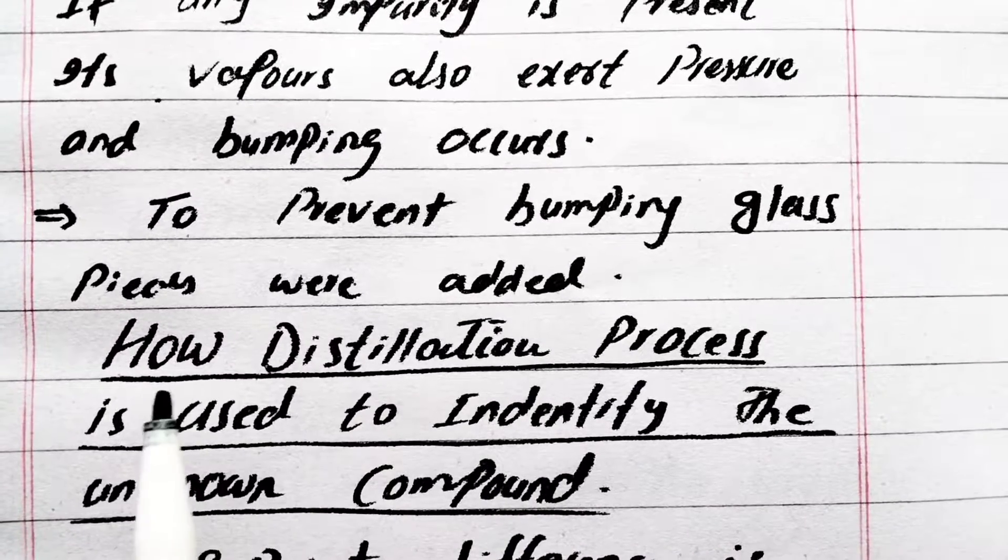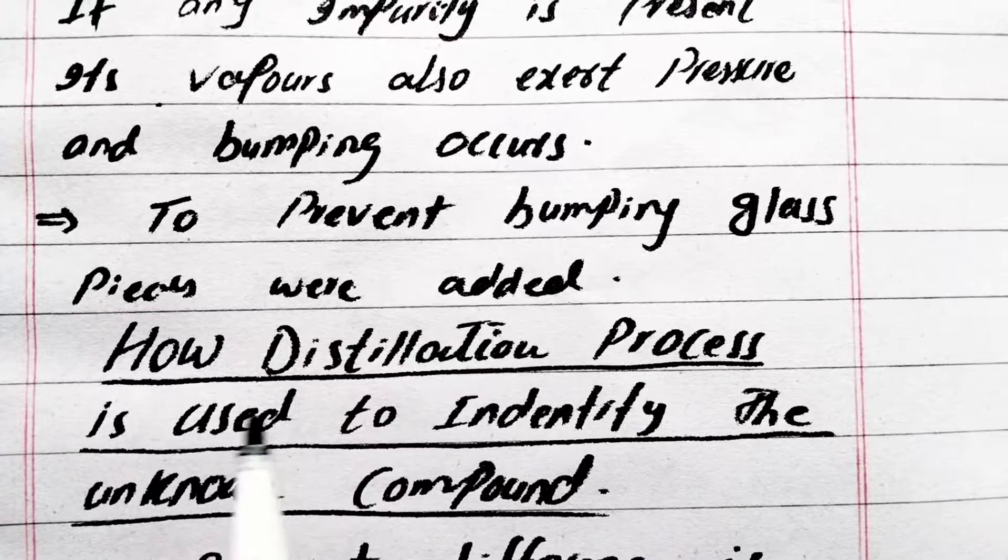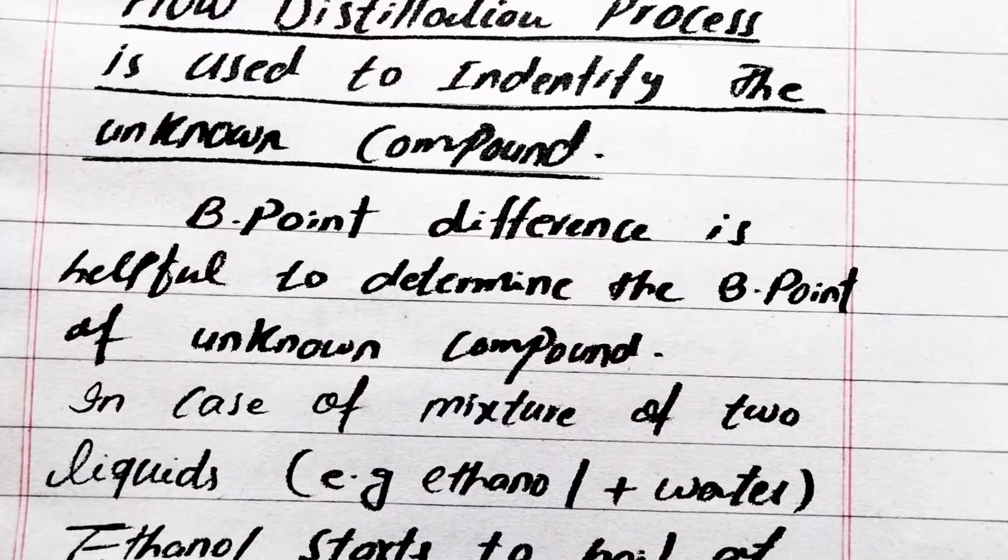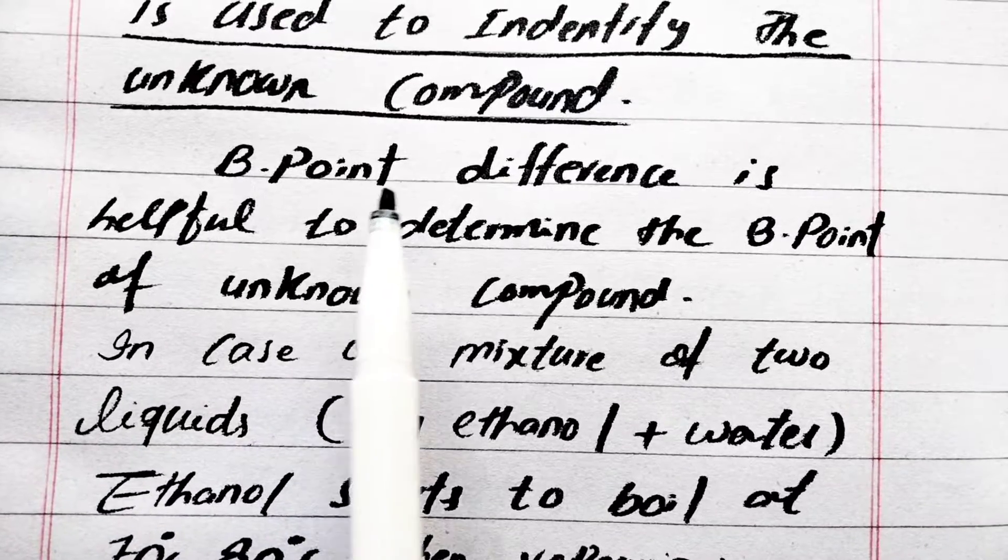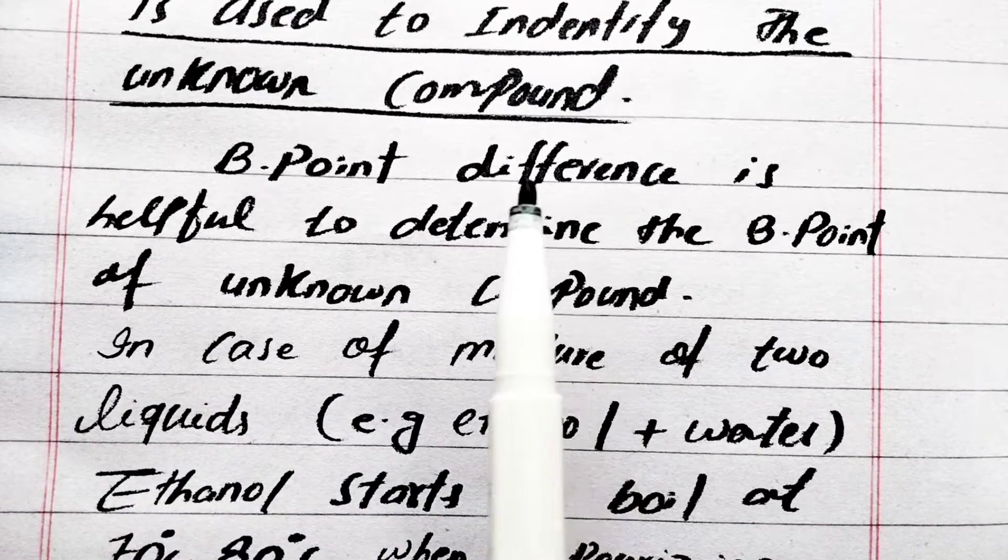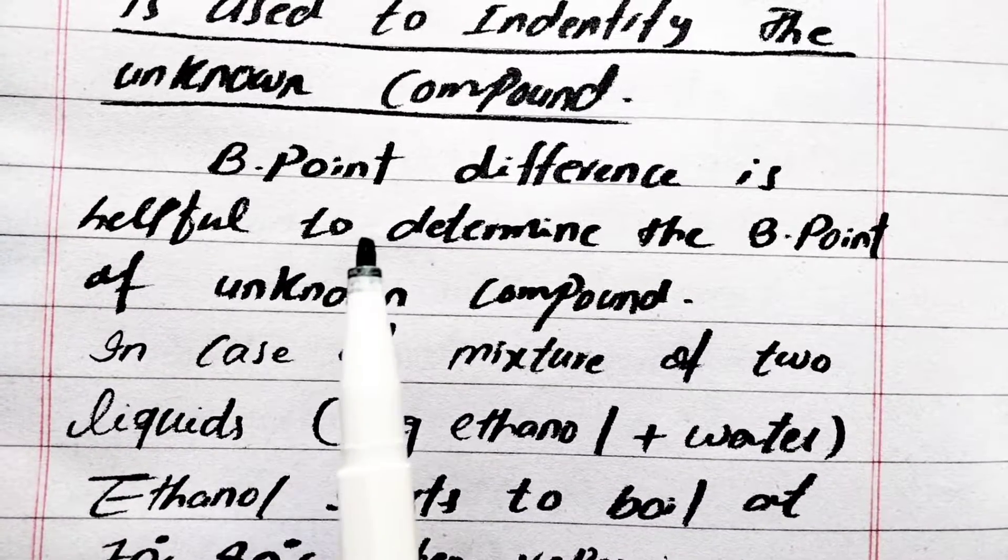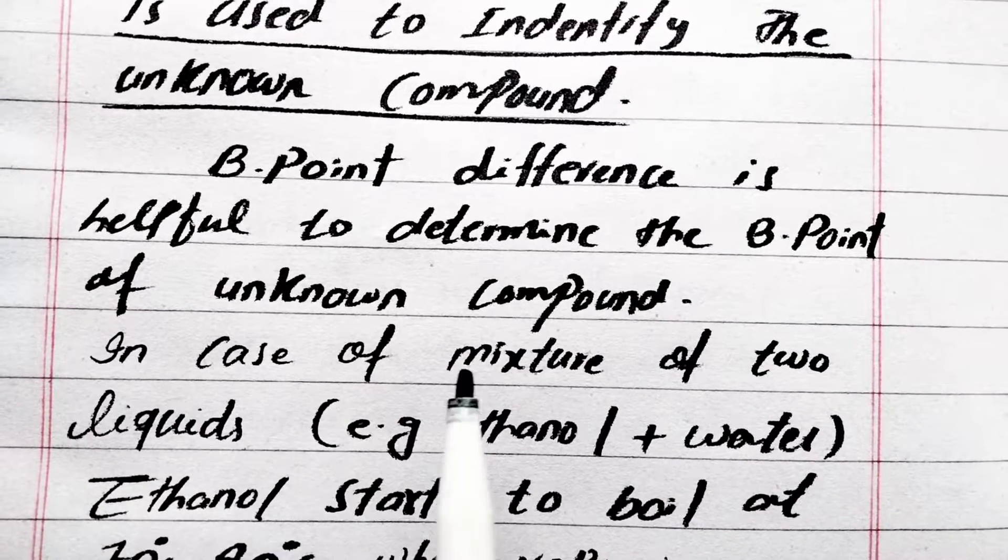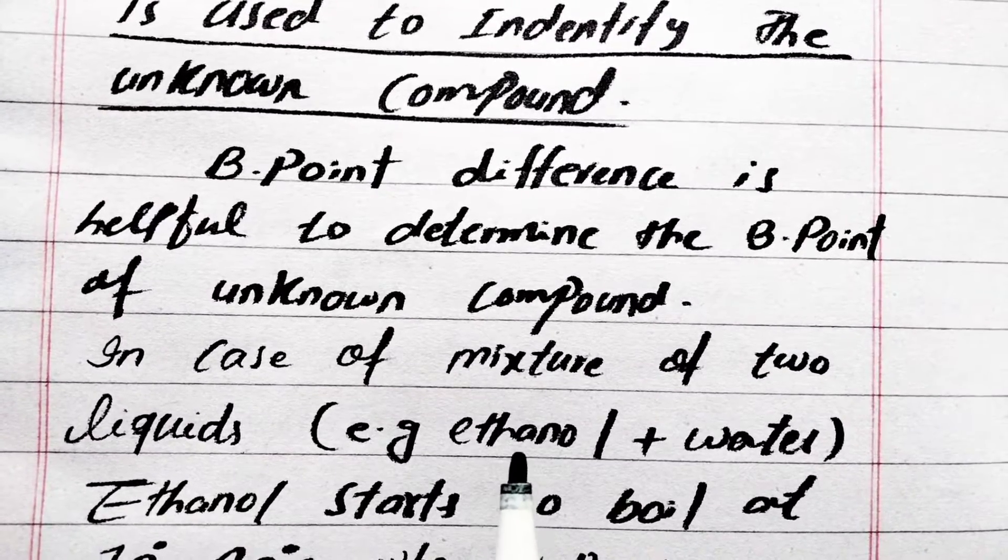How is distillation process used to identify the unknown compound? Boiling point difference is very helpful to determine the boiling point of unknown compounds. In case of the mixture of two liquids, for example, we have the mixture of ethanol and water.